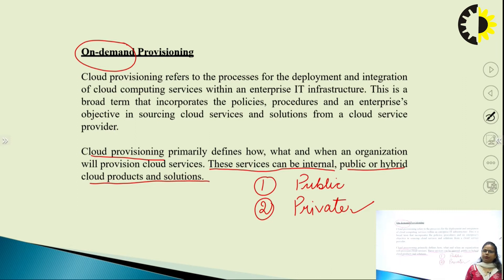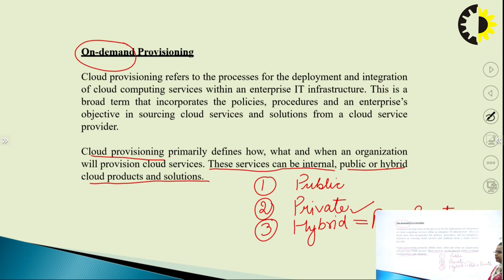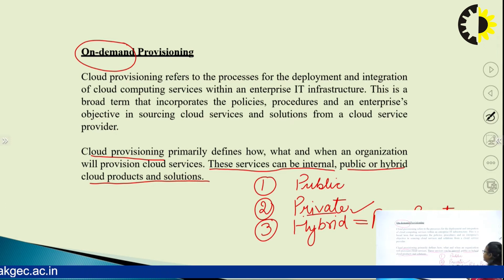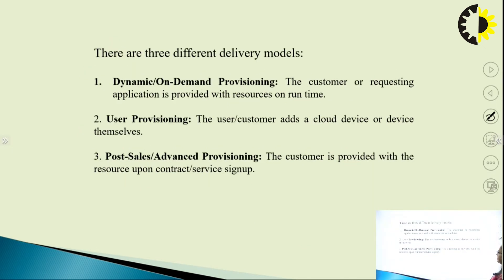The combination of public and private is called hybrid mode. In hybrid mode, they will not allow any client to access private data freely. The third type is hybrid services — hybrid means the combination of public plus private. Some part of the data is publicly accessible by any customer, and some data is private, accessible only by the employees of that organization. There are three types of delivery models in on-demand provisioning.